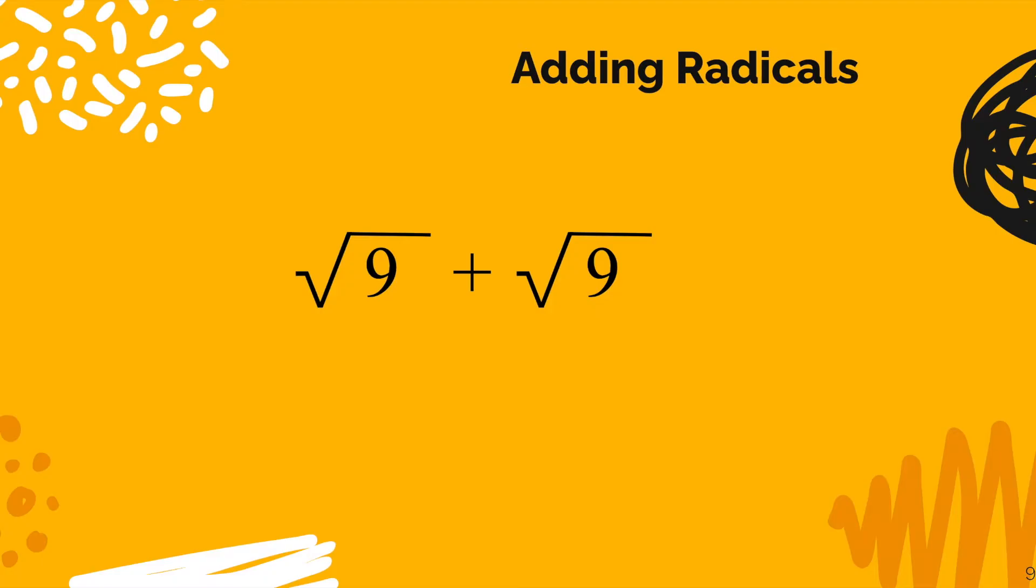Returning back to the statement radical 9 plus radical 9. What if we were to think about x plus x? Some number plus itself. Now, those are called like terms. And we get 2x when we add them together.